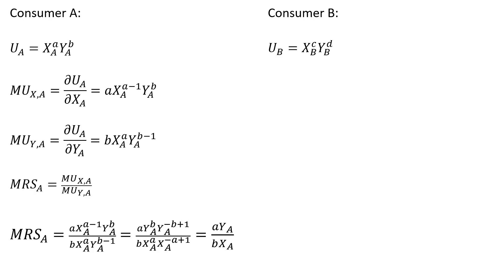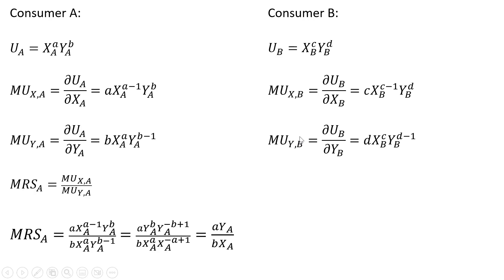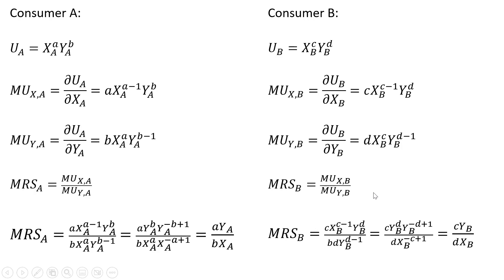We do a similar thing for consumer B: get the marginal utility for good X, marginal utility for good Y, form the marginal rate of substitution, make our substitutions in and simplify, and we get this nice result.